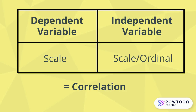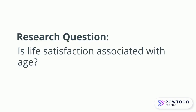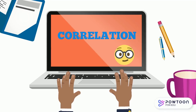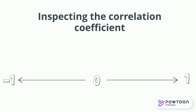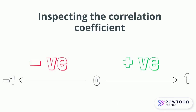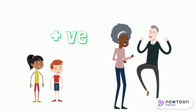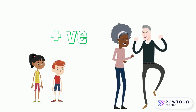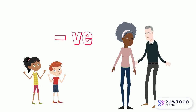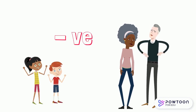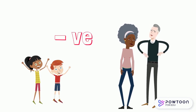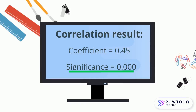If both your variables are scale, or if your independent variable is an interval-level ordinal variable, then we can run a correlation between the two variables. To answer the research question, is life satisfaction associated with age, where age is a scale variable, we run a correlation. The correlation gives us a coefficient between minus one and one, where anything above zero is a positive correlation, while anything below zero is a negative correlation. A positive correlation means that increases in one variable are associated with increases in the other — so in our example, as age increases, so too does life satisfaction — while a negative correlation indicates that as one variable increases, the other decreases. As well as the correlation coefficient, we also get a p-value, which if it is below 0.05 indicates that this relationship is significant.